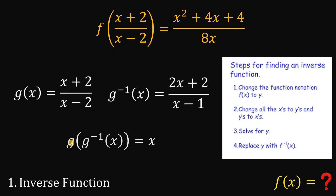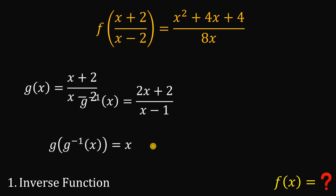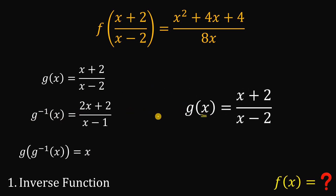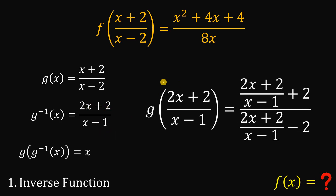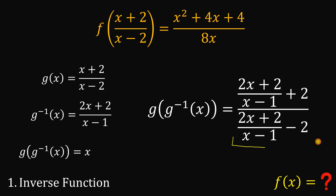Now let's verify this identity using composition of functions. If we compose g of g inverse of x, it should equal x. We take g of x and replace all x with g inverse of x, that is (2x+2)/(x-1). So this x becomes (2x+2)/(x-1), and the same substitution applies to both the numerator and denominator terms. Let's now simplify the right-hand side.